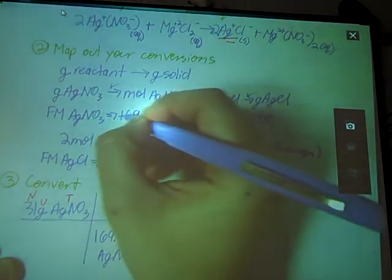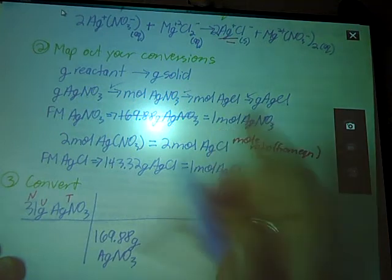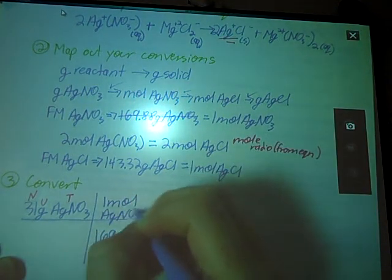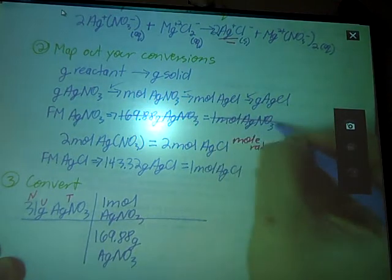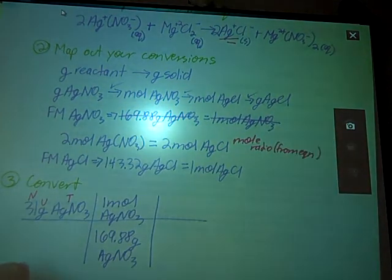So grams of silver nitrate, here's the next place that it appears. So we're going to write the number, and the unit, and the thing. And we're going to cross out the one that we just used. On top goes the other piece of my conversion factor, number, unit, thing. And that takes care of this piece. I used that whole conversion factor. Now I can move on.